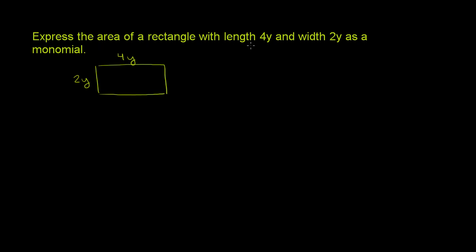Express the area of a rectangle with length 4y and width 2y as a monomial. So the area of a rectangle is just the width times the height, or the base times the height.